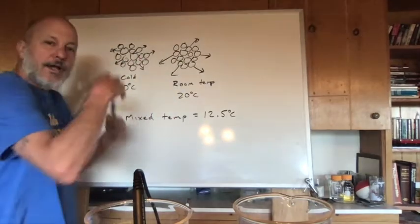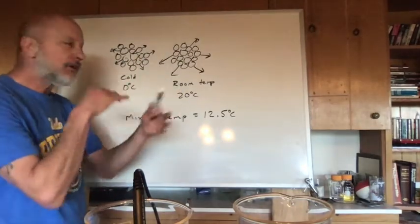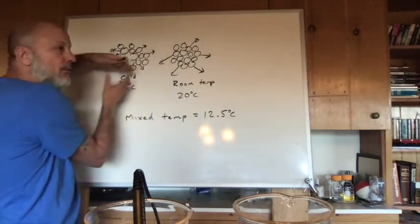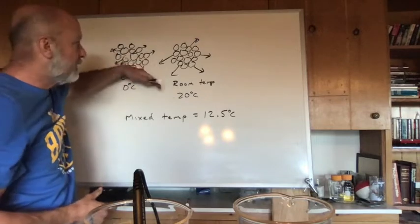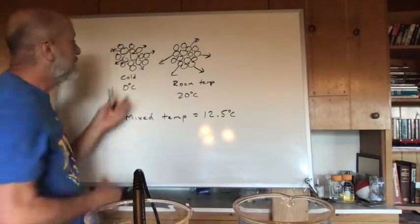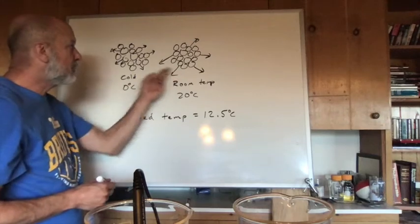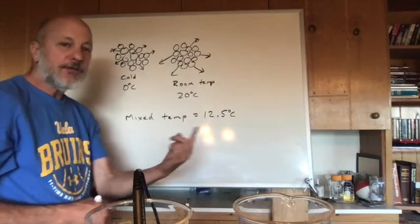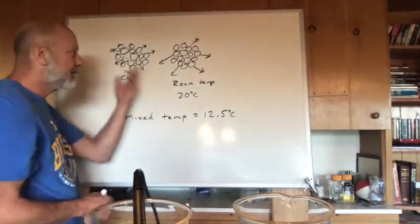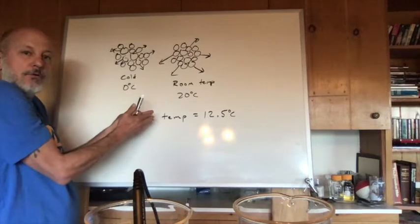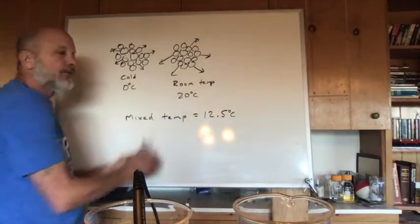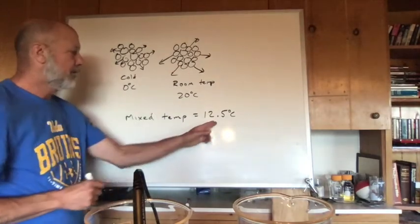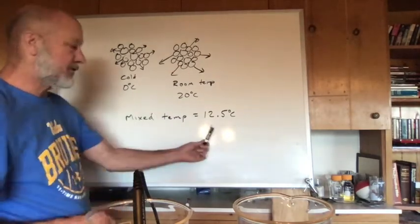When I mix them, they intermix and collide. The faster-moving molecules collide with the slower ones; the slower ones absorb some of that extra kinetic energy and start moving a little faster. So I slow down the warm ones and speed up the cold ones, reaching some average. Because I added a little less cold water than room-temperature water, the mixed temperature came out to 12.5 degrees C.